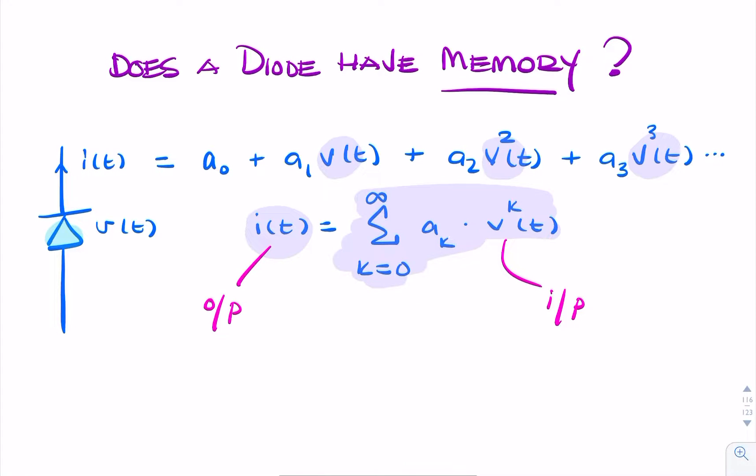Now, if the output depends on any future value, or any past value, then the system has memory. If it only depends on the output at the present time, or if the output only depends on the input at the present time, then it doesn't have memory, it's memoryless.